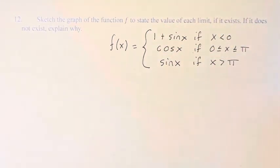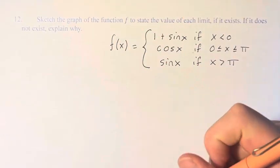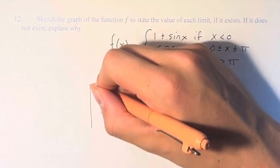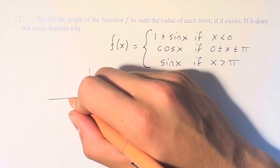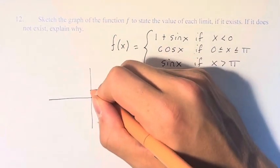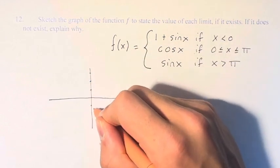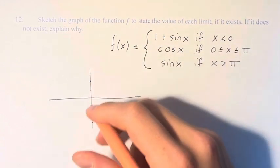So we have three functions here that form the piecewise function f of x. And so we're going to graph this function. So we have these certain values, right?